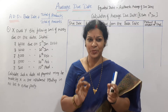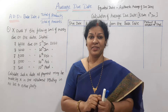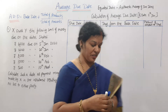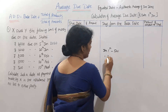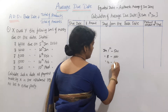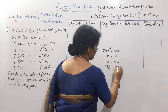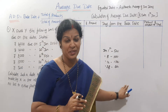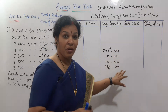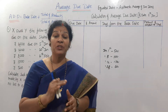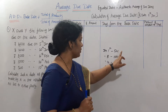Now coming to Average Due Date — this is specially related to payments. Suppose a person X has to make payment to Y on different dates: January 1st he has to pay 500, January 8th 1,000, January 12th 1,500, and January 28th 600. Like this, different payments are there. He did not make anything on those four days. Rather than paying each amount separately, he wanted to pay the total amount at one time. If you total up, it comes to 3,600.